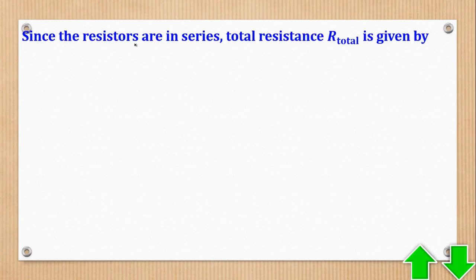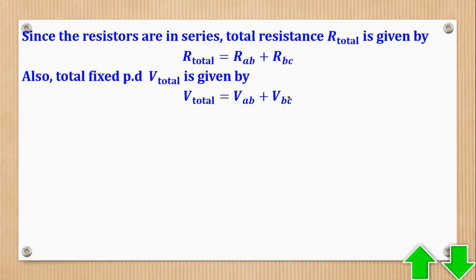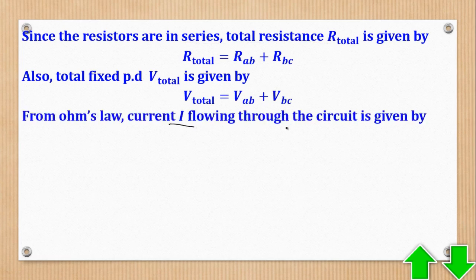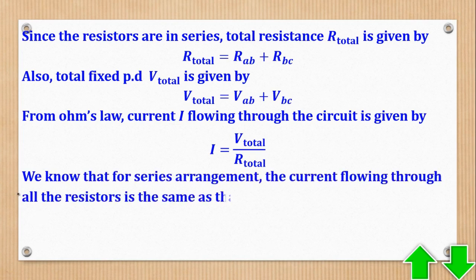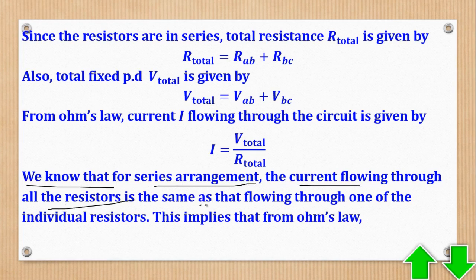Since the resistors are in series, total resistance is given by adding the two. Also, total fixed PD V total is given by adding the individual PDs VAB and VBC. From Ohm's law, the current I flowing through the circuit will be V total over total resistance. For series arrangement, current flowing through all the resistors is the same as that flowing through one individual resistor.